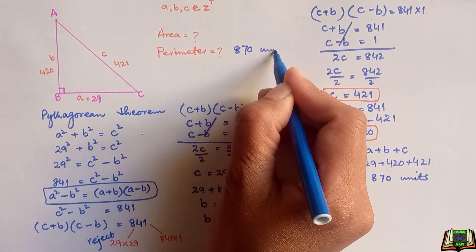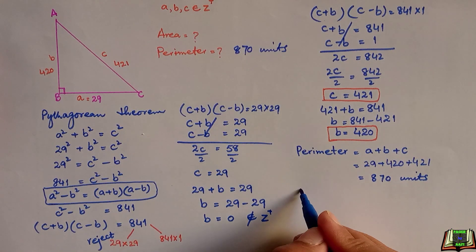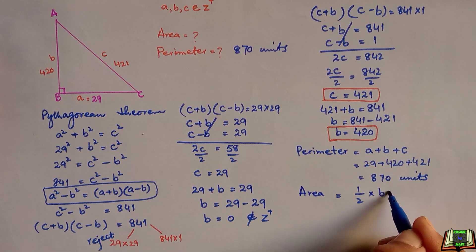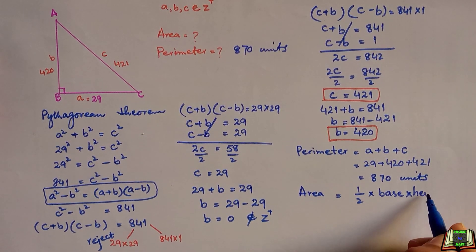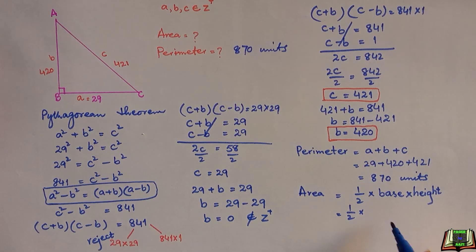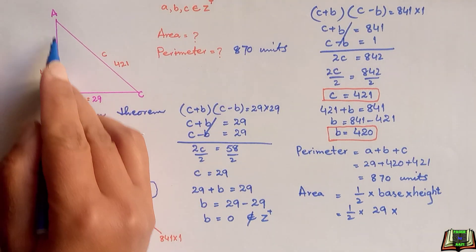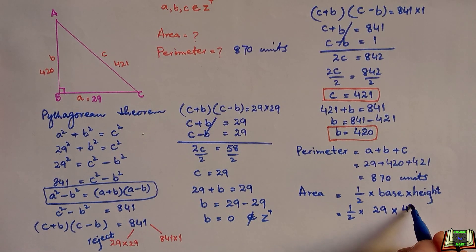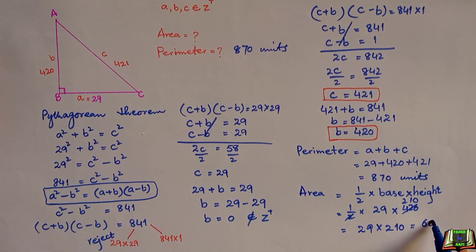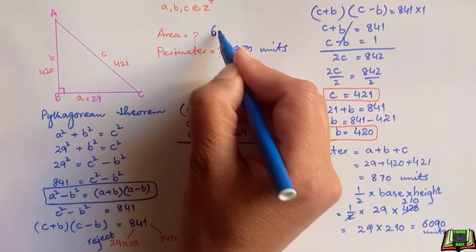Now we will find the area. The area of a right angle triangle is equal to half times base times height. The base is 29 and the height is 420, so the area is ½ × 29 × 420 = 29 × 210 = 6090. Therefore the area of this right angle triangle is 6090 square units.